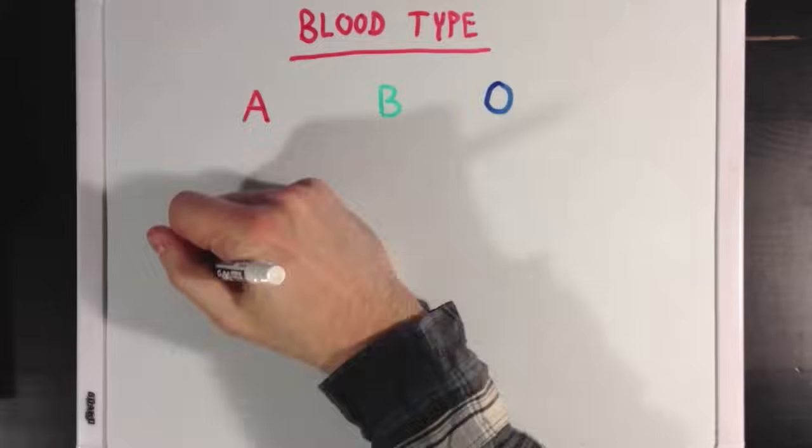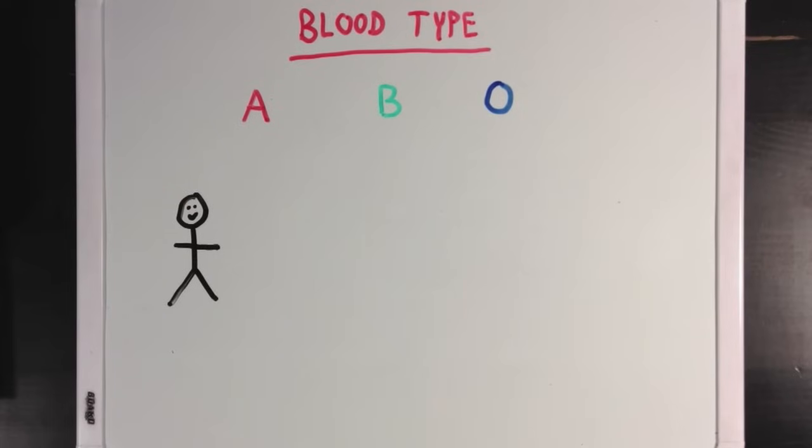And let's say that we have this guy here, and his alleles both code for blood type A. And I'll use the letter A for that. And let's say we have this girl here who has one allele coding for A, and another allele coding for blood type O.